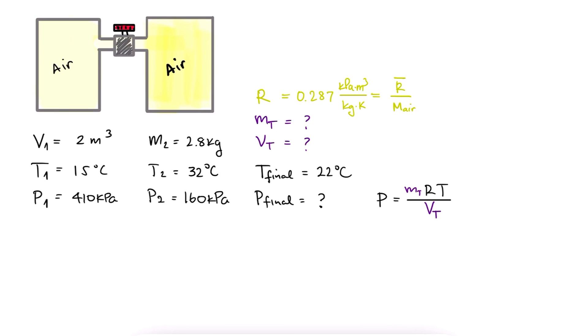The total volume will be the volume of the first tank, which we have, plus the volume of the second tank. We can find the volume of the second tank again with the ideal gas equation. V is equal to MRT over P, and we have everything. Remember that we need the temperatures in Kelvin because of the units of our gas constant.